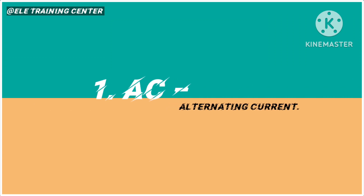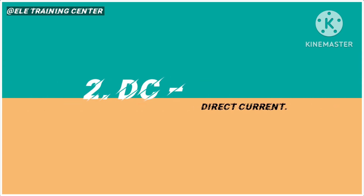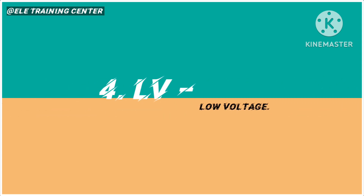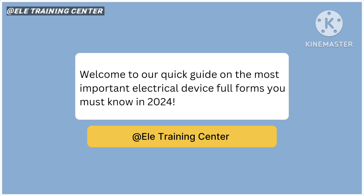AC - alternating current. DC - direct current. HV - high voltage. LV - low voltage. Welcome to our quick guide on the most important electrical device full forms you must know in 2024.